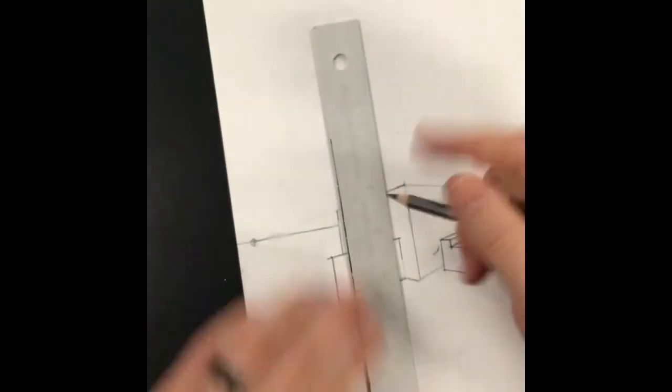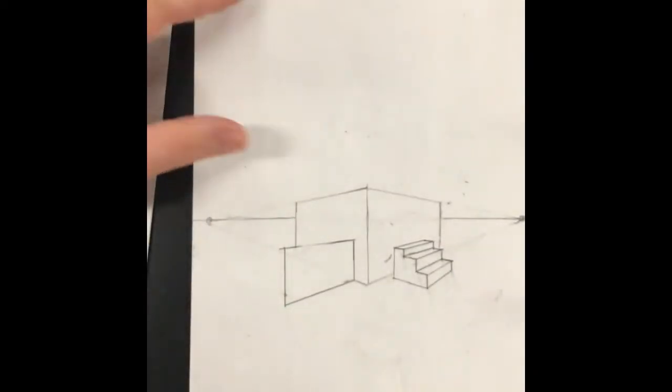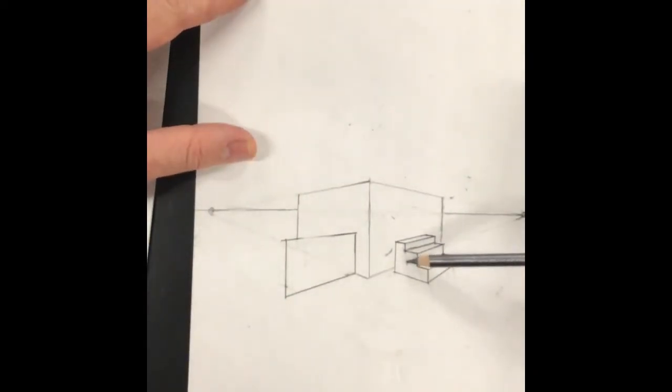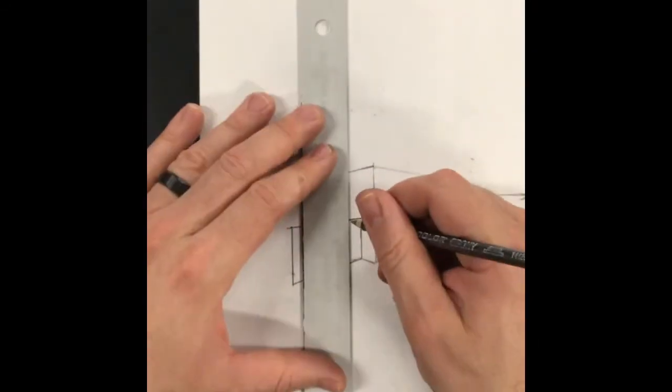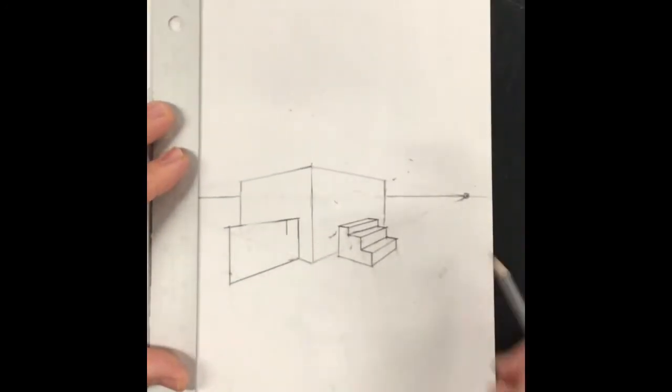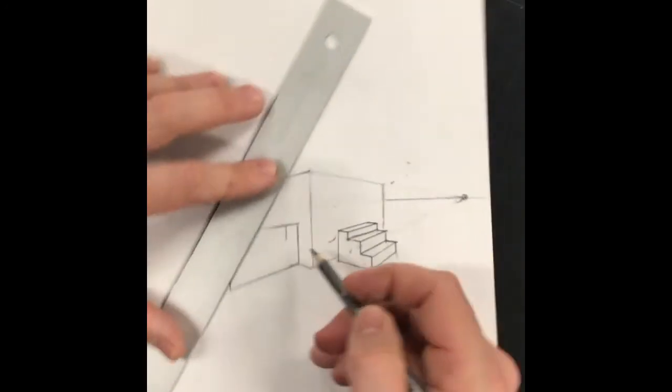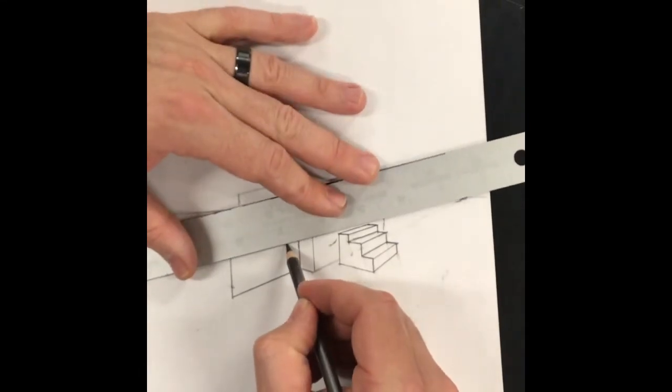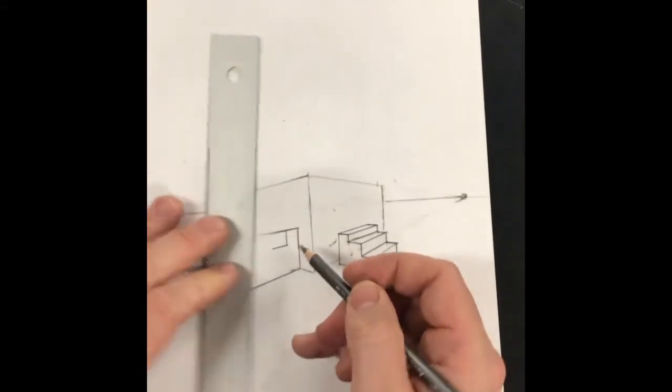Now that you've done that, what we're in effect going to do is create the side of the stair before creating the steps. To do that we start by making a vertical line down. Then this is the critical part, we got to line up with our vanishing point as we extend out each time. So I'm going to extend out, vertical line down.